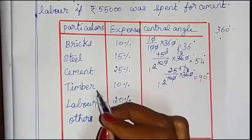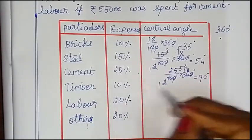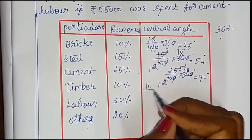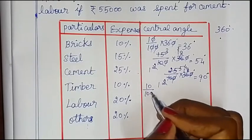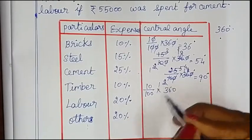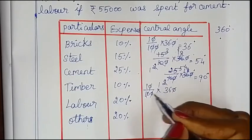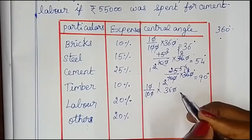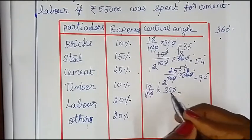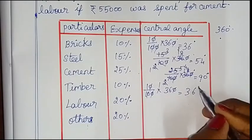Timber is 10 percentage. So 10 by 100 into 360 degrees. We can simplify the denominator — cancel the zeros. 36 into 1 is 36 degrees. Timber central angle is 36 degrees.